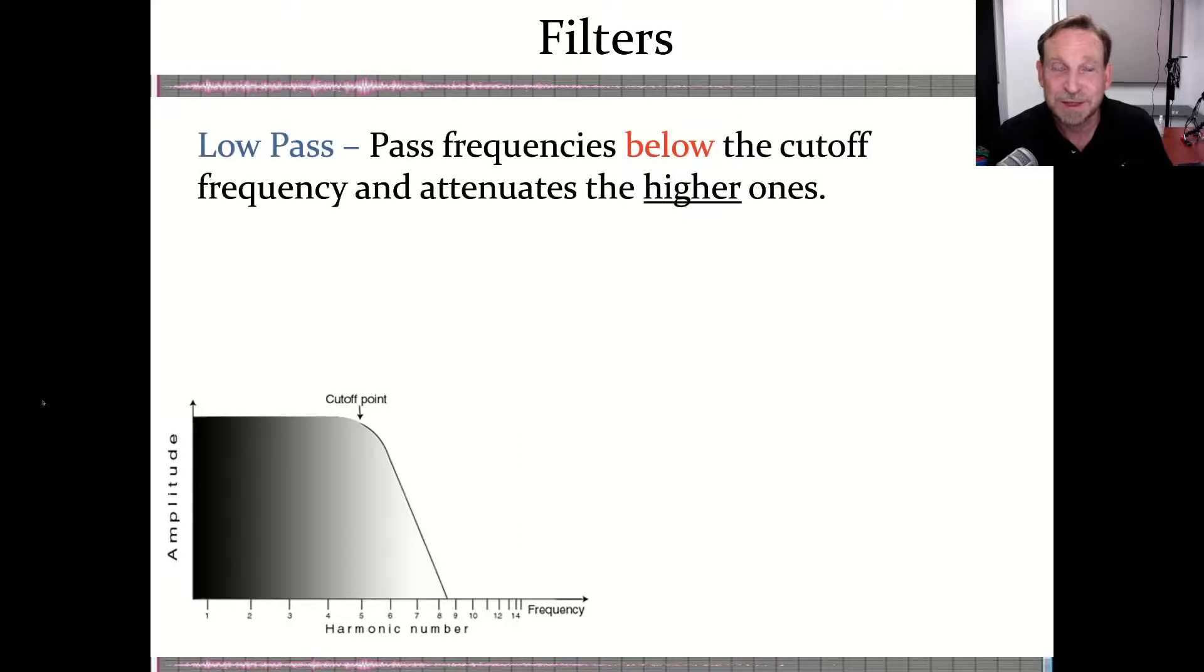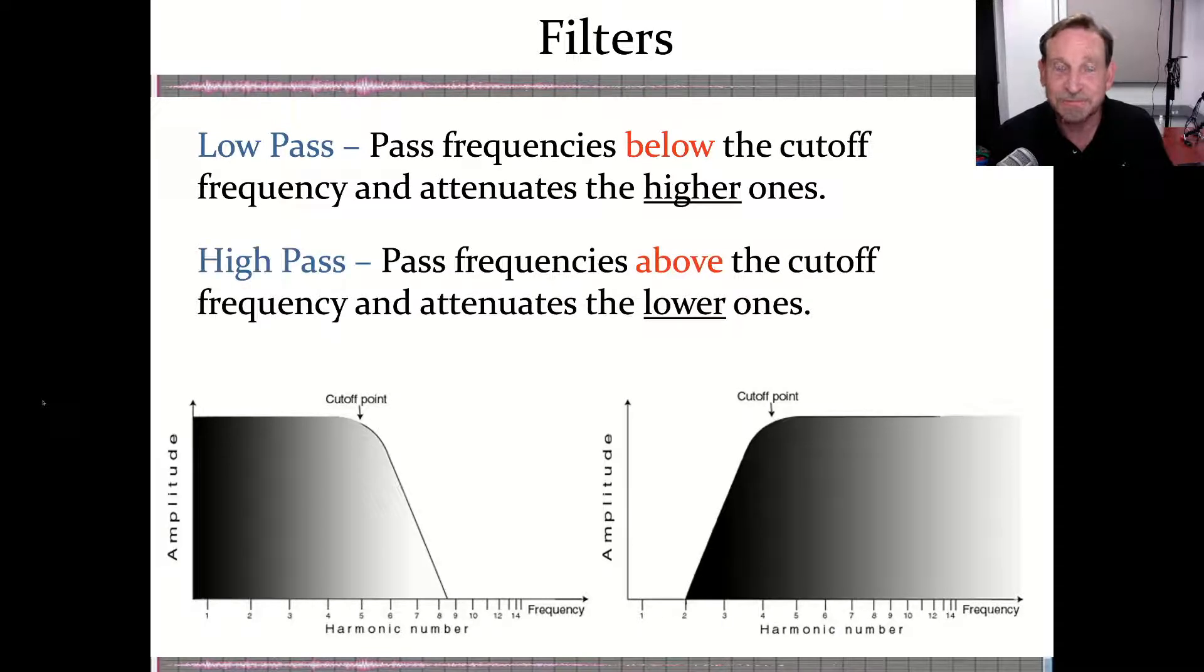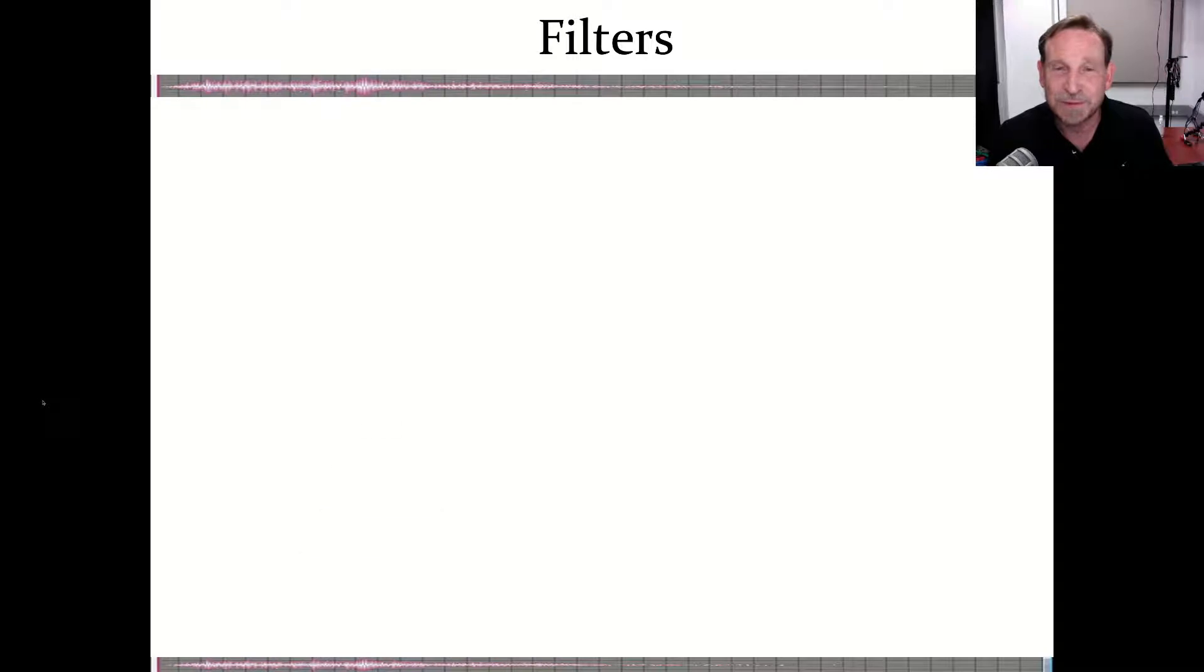So in detail, low-pass filter: the frequencies below the cutoff are being allowed to pass through. The frequencies above are being reduced. High-pass filter, just the opposite. Frequencies above pass through. Frequencies below get rolled off. So those are two that are part of this family of four filters that are like this.